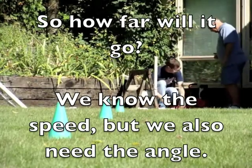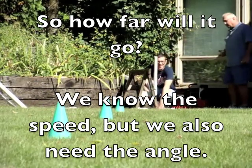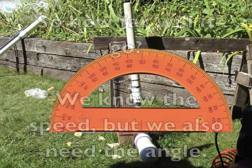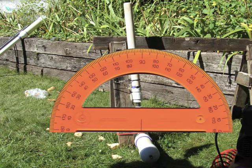So how far will it go? We know the speed, but we also need to know the angle that the gun is shooting at. So I'm going to use a protractor, and we find that the gun is aimed at an 83 degree angle.